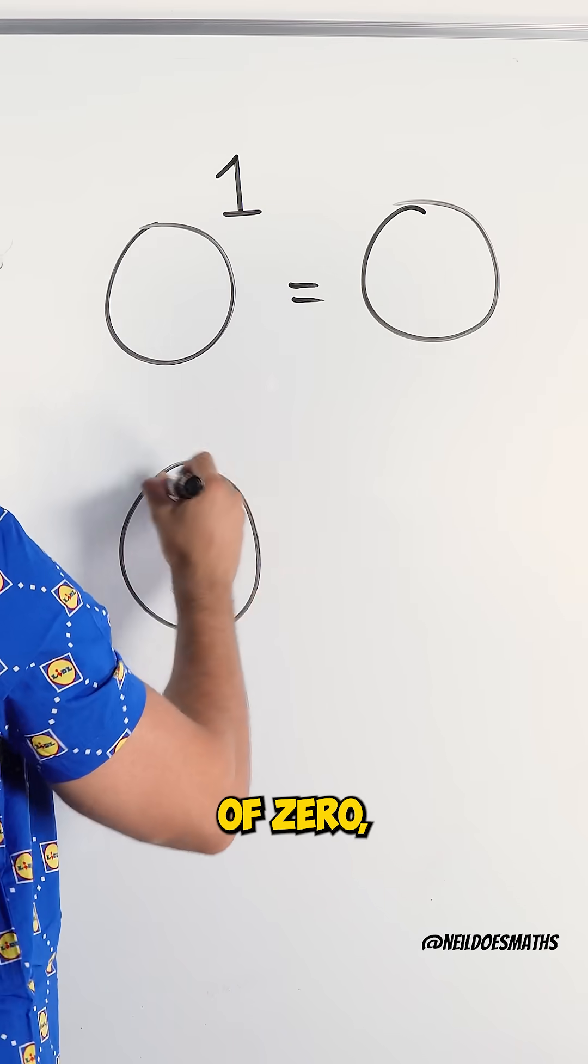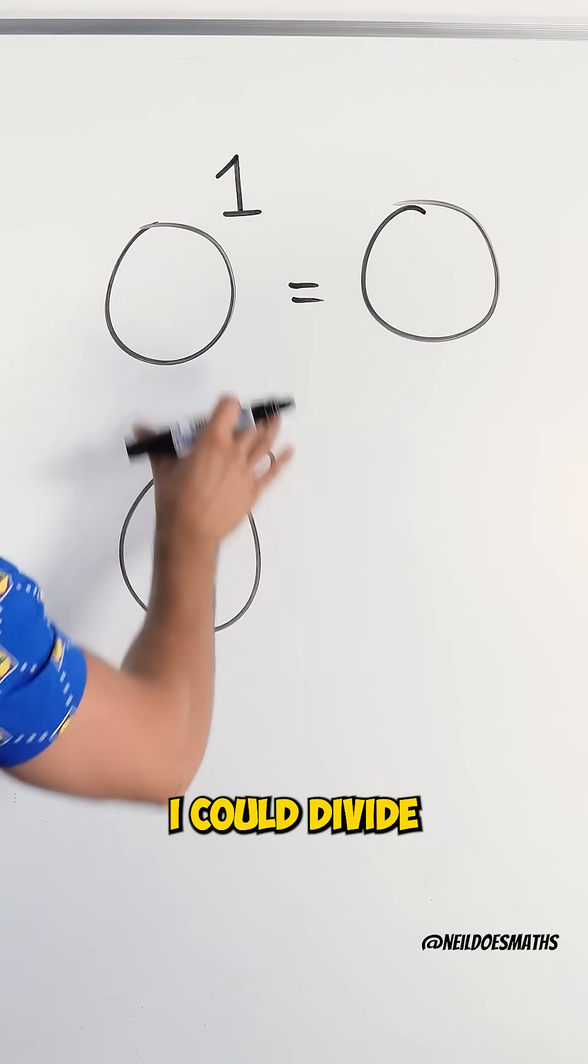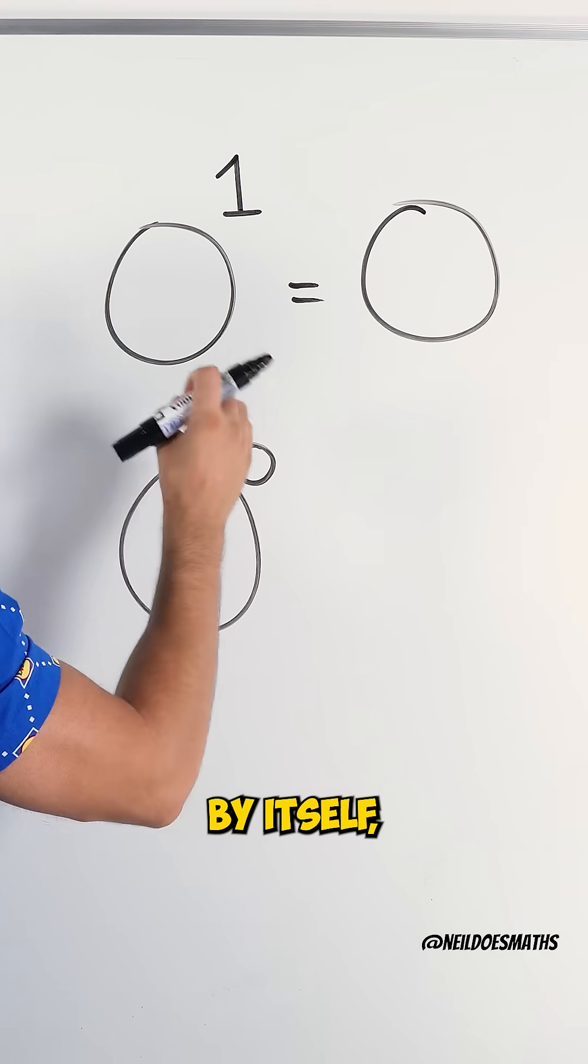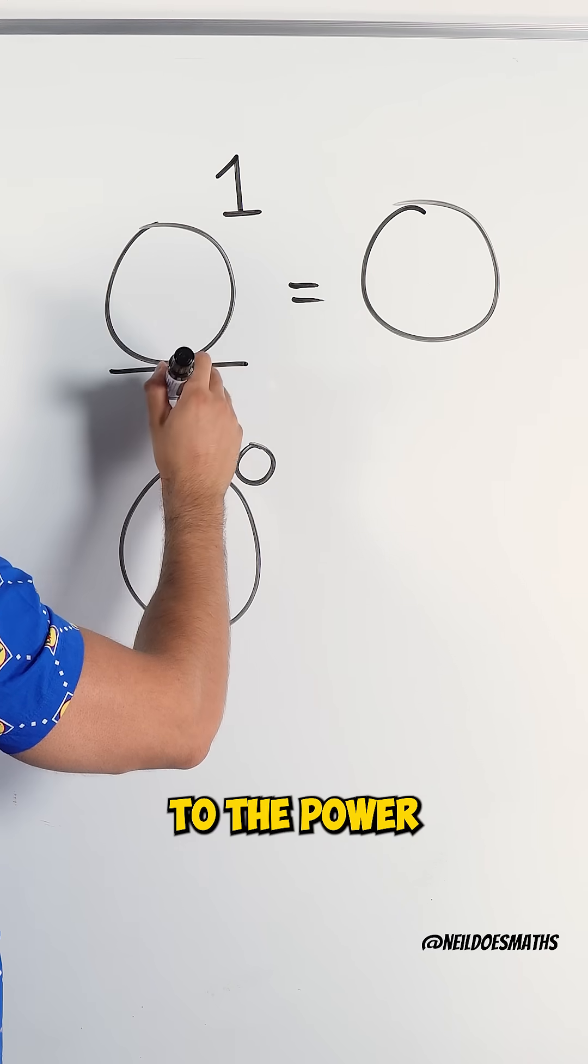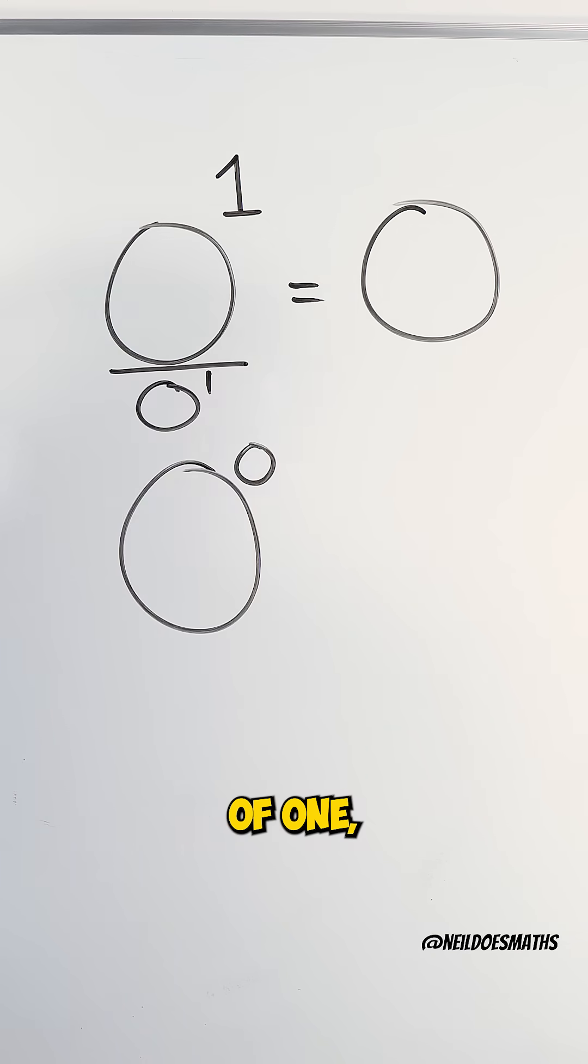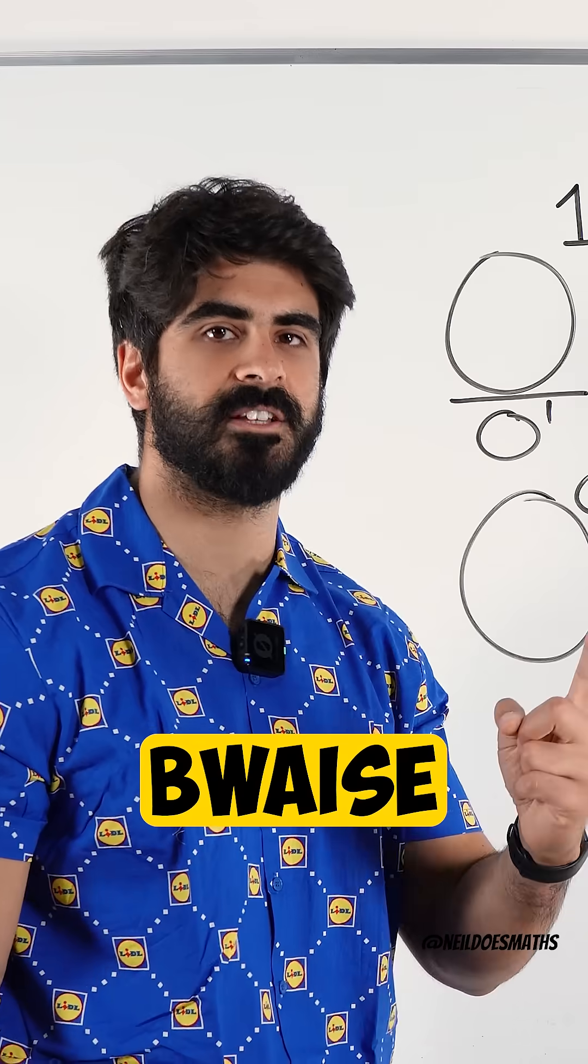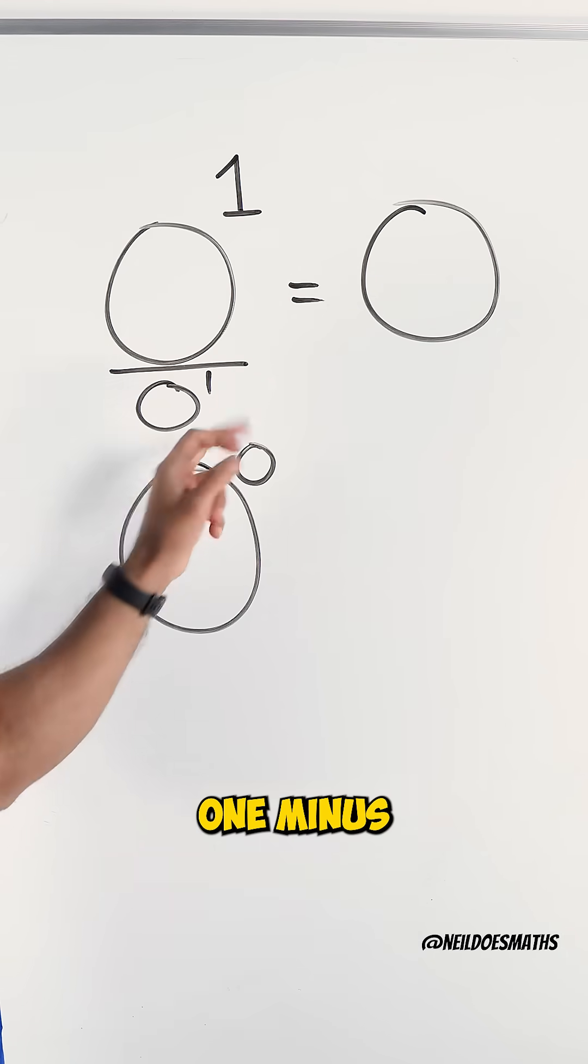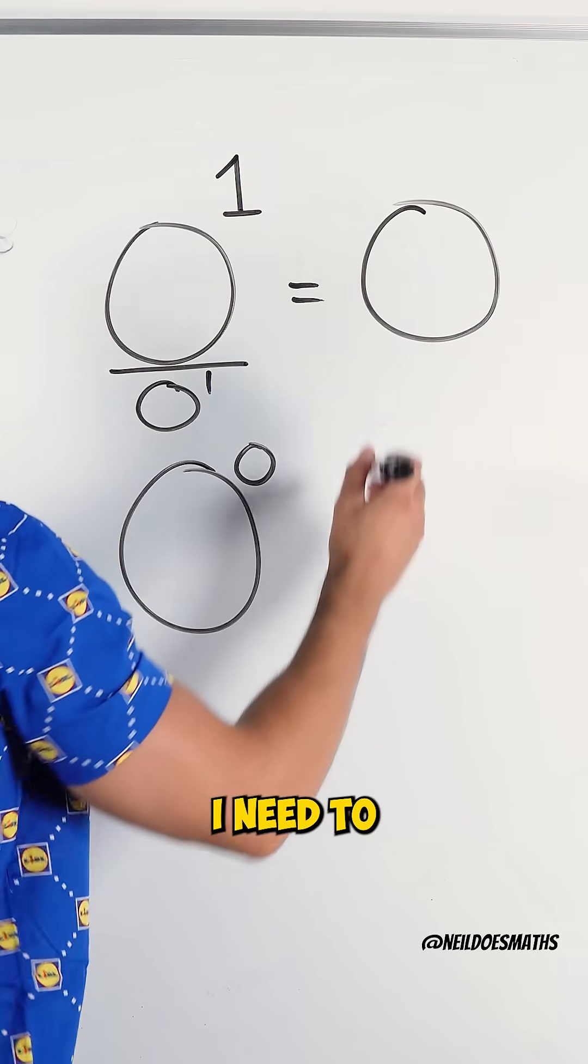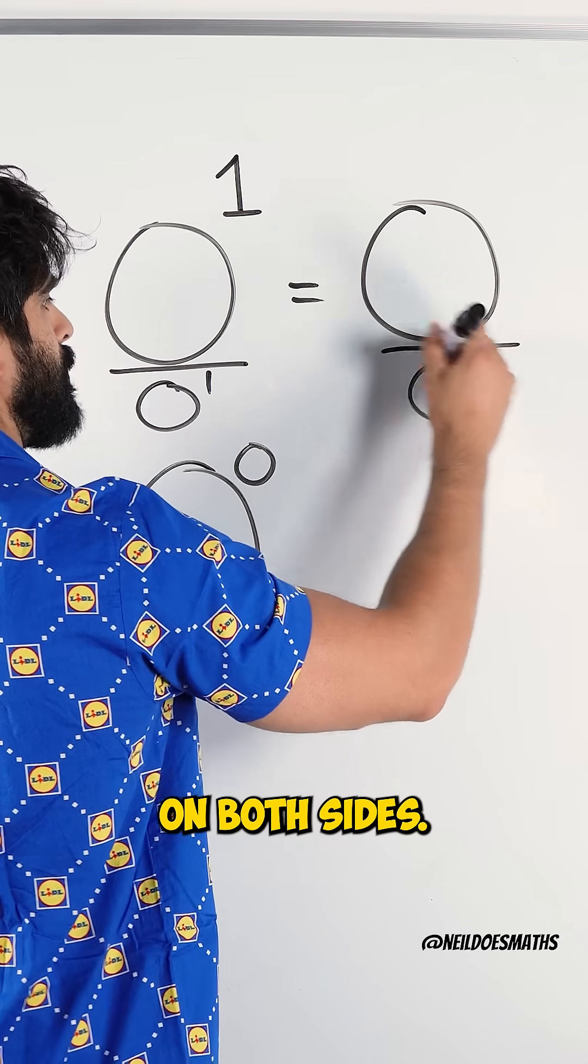Now, if I want to get zero to the power of zero, I can do something cool here. I can divide this number by itself. Because if I do zero to the power of one divided by zero to the power of one, when we divide two numbers with the same base, we subtract the powers. One minus one is zero. But then that would mean I need to divide by zero on both sides.